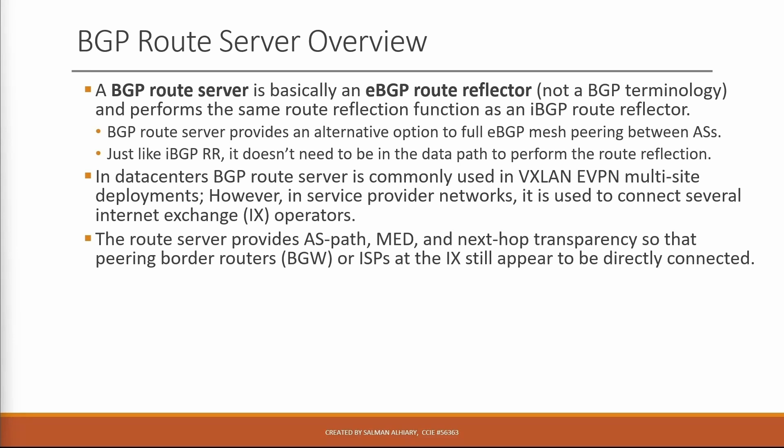The route server provides AS Path, MED, and Next Hop transparency so that peering border routers or ISPs at the internet exchange still appear to be directly connected. So there is no change in the AS Path, MED, or Next Hop when the route server reflects the route to other peers. I will show you that in the lab.